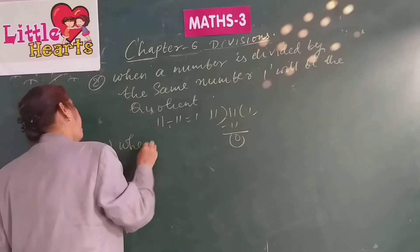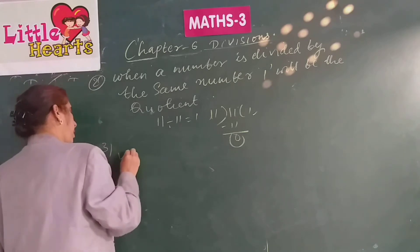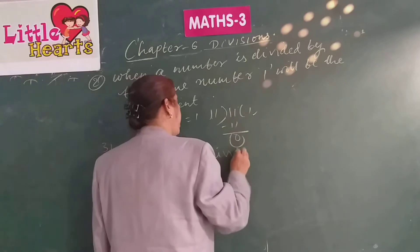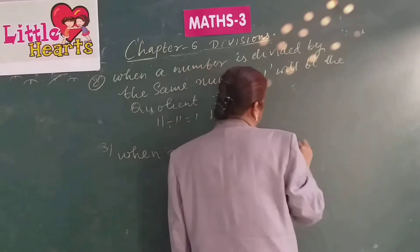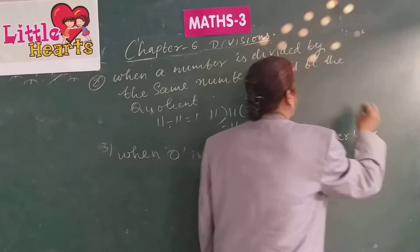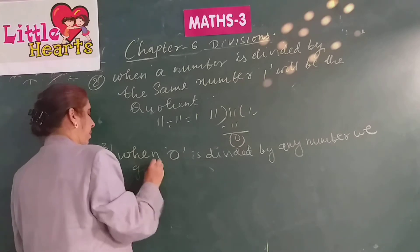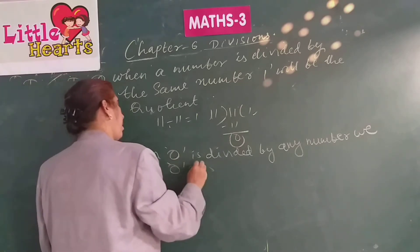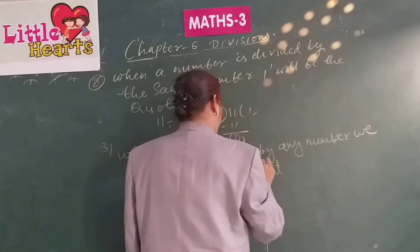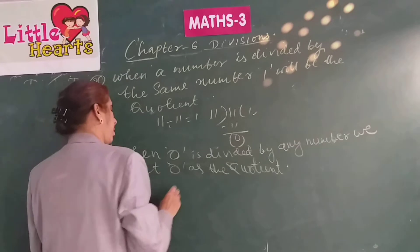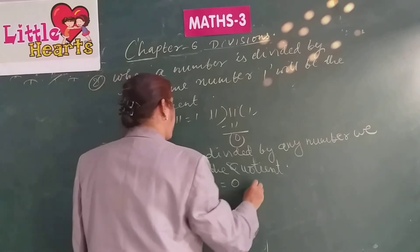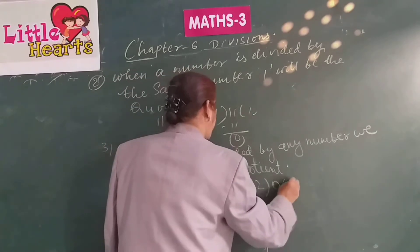When 0 is divided by any number, we get 0 as the coefficient. For example, 0 divided by 12 equals 0 — 12 zeros are 0.